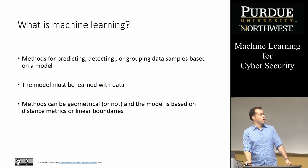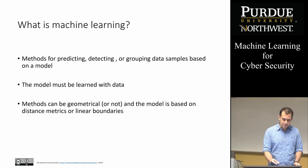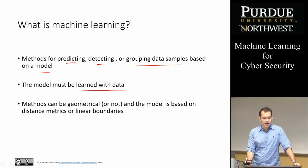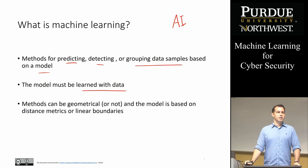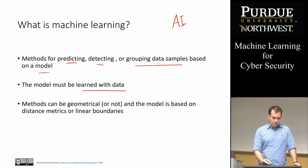What is machine learning? Machine learning is basically methods for predicting, detecting, or grouping data samples based on a model. The model must be learned with data — that's why it's different from AI. AI is a broader term and doesn't necessarily always learn from data; AI can have heuristic rules or other ways of learning. Whereas machine learning is more focused on learning from data — you want to learn on samples with associated labels and find correlations there.